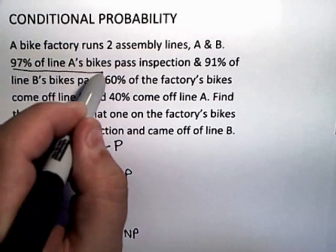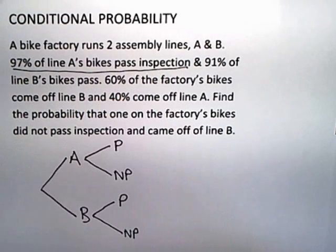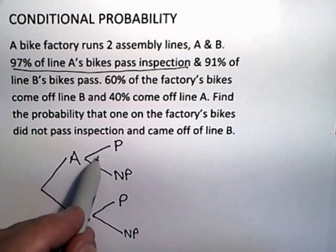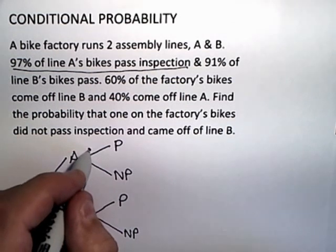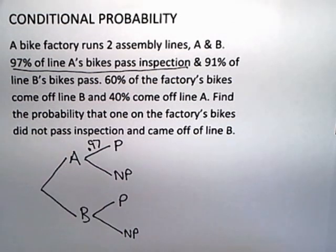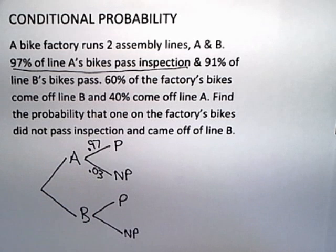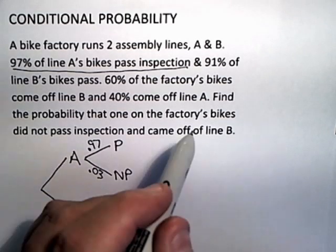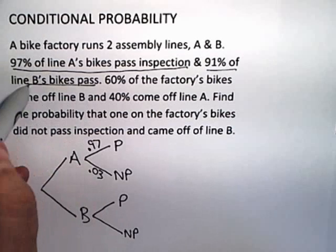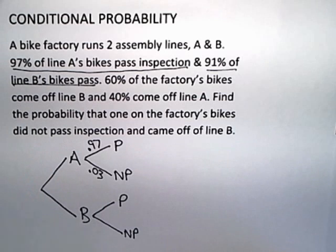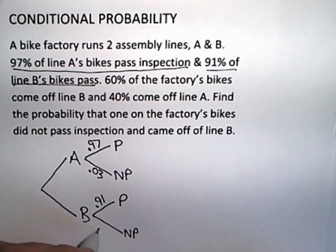I know that 97% of line A's bikes pass inspection. So if I go to the line A branch where they pass, I can label that 0.97. That means, of course, that the other 3% do not pass. I also know that 91% of line B's bikes pass. So if I go to line B, I get 0.91 in the pass column, which means I get 0.09. The other 9% don't pass.